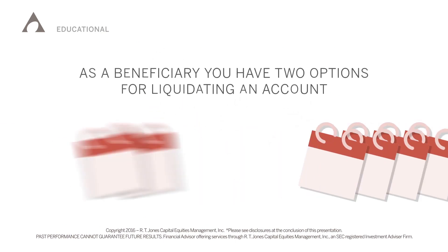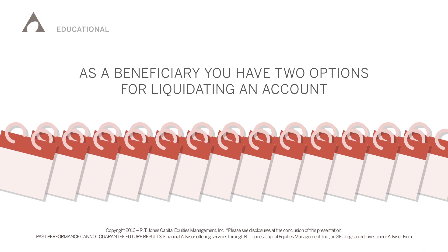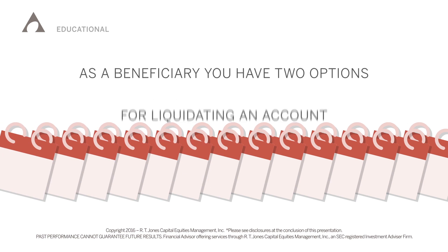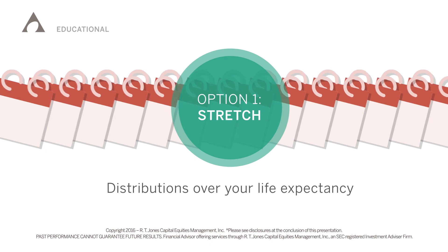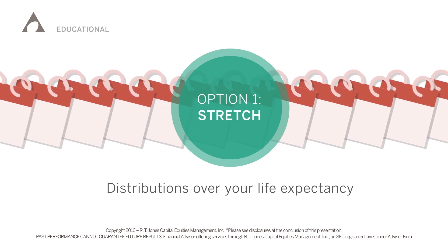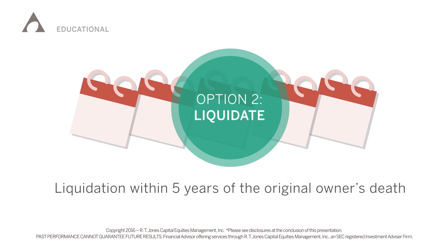If you inherit a retirement account and are a designated beneficiary, then you have two options for liquidating the account. You can take distributions over your life expectancy, known as the stretch option, or you must liquidate the account within five years of the original owner's death. You must start taking distributions from the inherited retirement account within a year after inheriting the account, even if you haven't reached the magic age of 70 and a half.